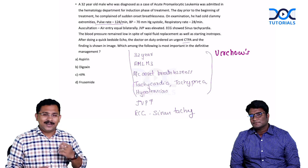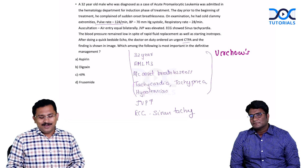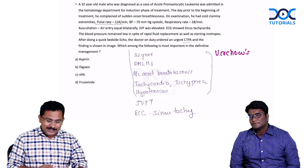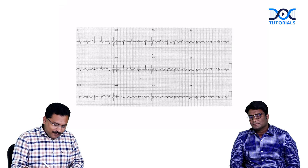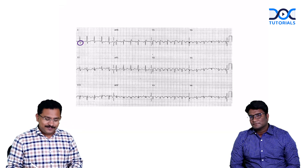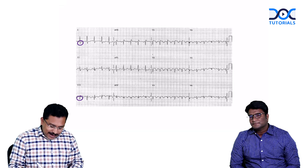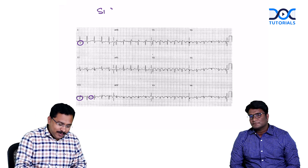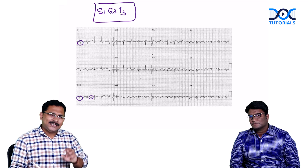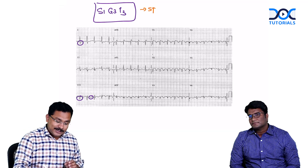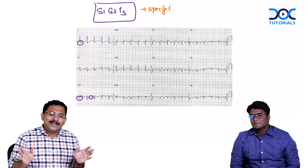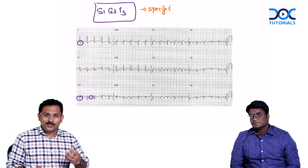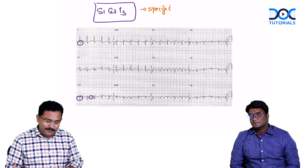ECG is showing sinus tachycardia - is that consistent with pulmonary embolism? For your entrance exams you would have heard of S1Q3T3, the ECG finding where you have a prominent S wave in lead 1, a prominent Q wave in lead 3, and T inversion in lead 3. This S1Q3T3 pattern is very specific for pulmonary embolism. But if you ask what is the commonest ECG finding of pulmonary embolism, it is going to be sinus tachycardia. Sinus tachycardia goes very well hand in hand with the diagnosis of pulmonary embolism. You can just have a sinus tachycardia without the S1Q3T3 as well.